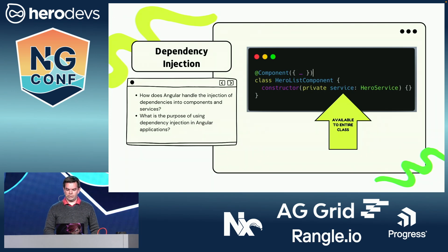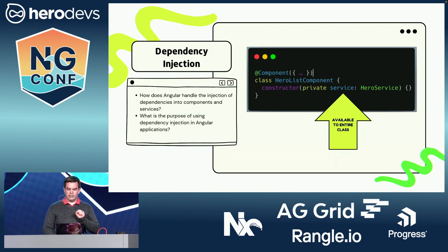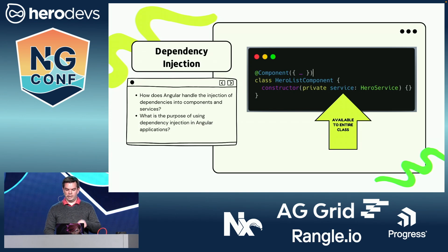Here you have a hero service from the documentation, and just by putting it right there in the constructor, it's available throughout the entire file. You don't have to do an import at the top or anything — just through the constructor, it's there.